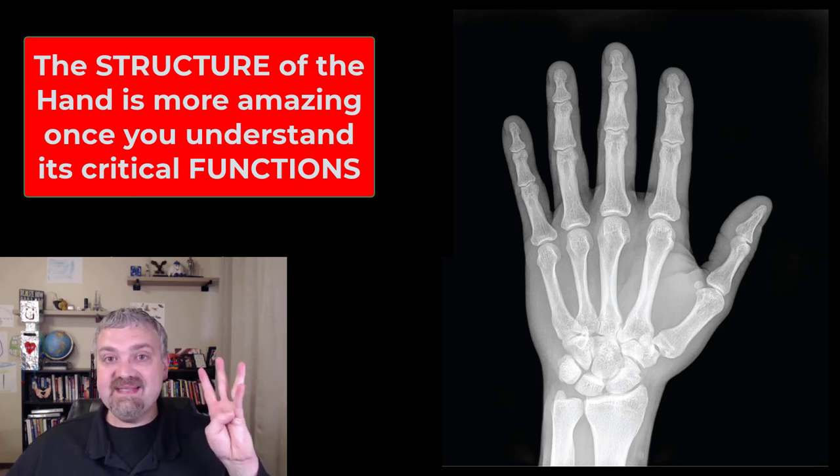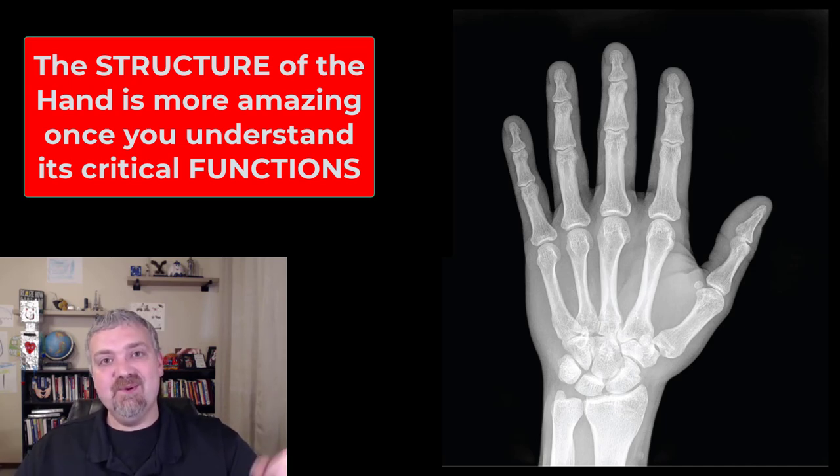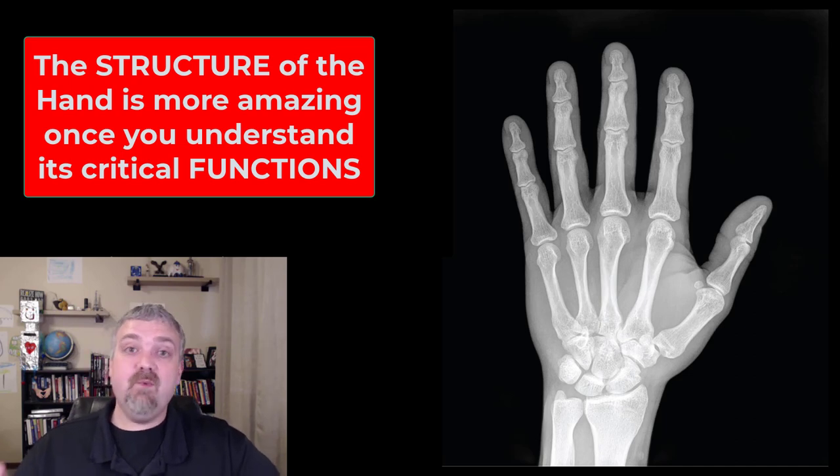So the fact that I can do this doesn't seem like that big of a deal, but it's a huge deal because it means that I can text, or I can play video games. I could hold tools, these kinds of things. So our opposable thumbs, the function of this hand has given humans a huge advantage on this planet. So that's why structure and function are intimately connected and need to be.